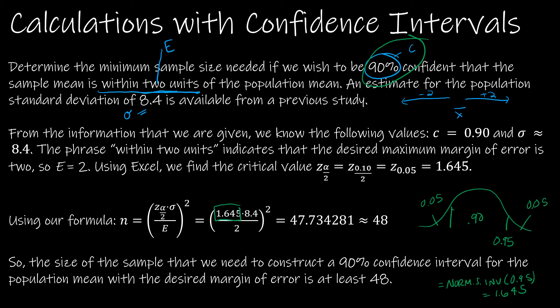That's where this value comes from. So that's the only thing really that we need Excel for. Or if you want to use the standard normal table, you can. But again, my focus in this course is on Excel. So all I have to do then is use my calculator or Excel to find the 1.645, multiply it by the 8.4, which is sigma, divide it by E, which is 2. Once I find that solution, I square it.